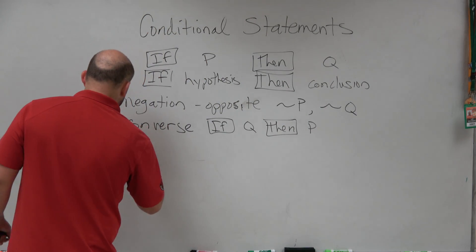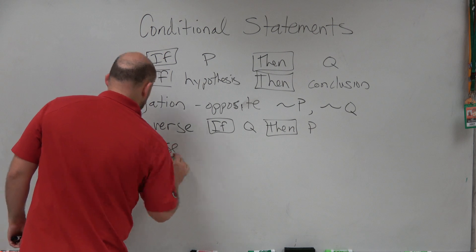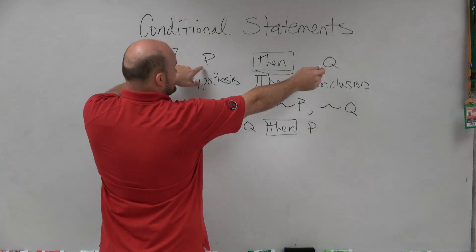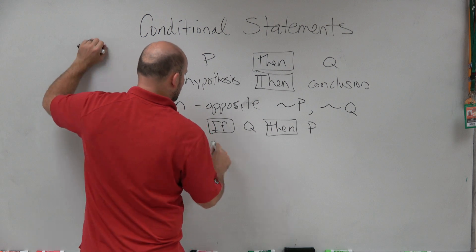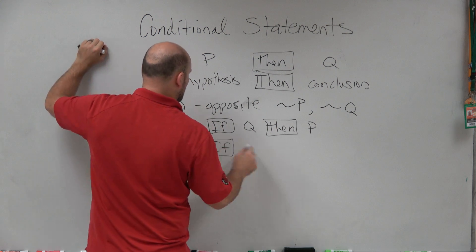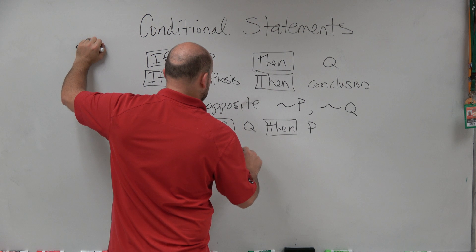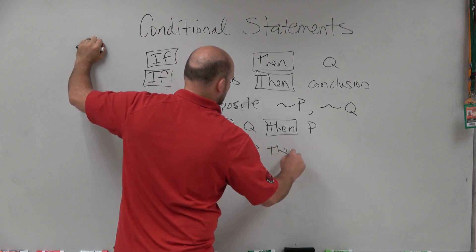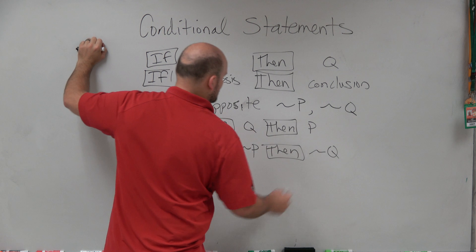The inverse keeps the same order, if p then q, but negates both parts. So it becomes: if the opposite of p, then the opposite of q.